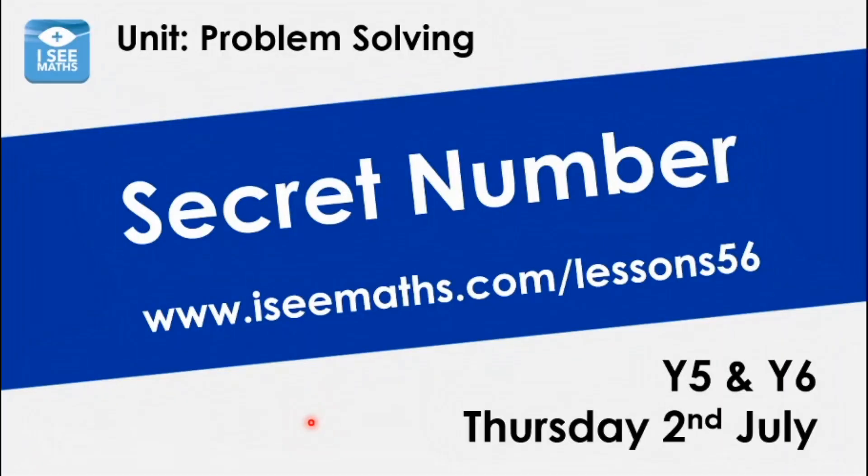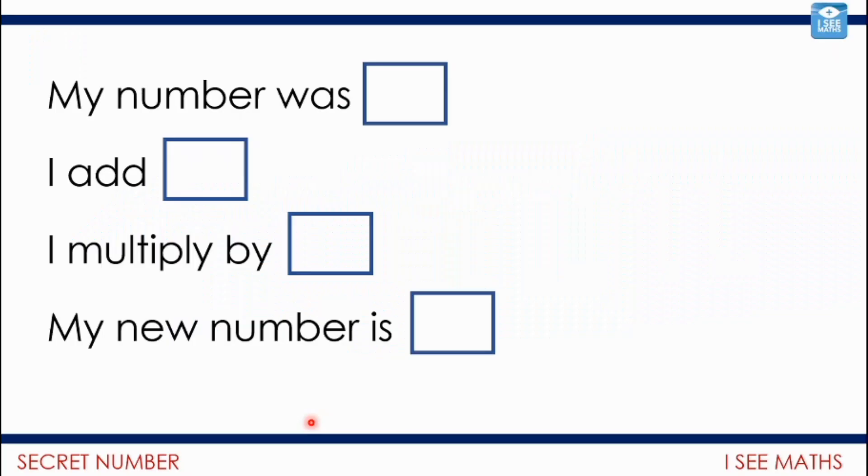So today's main task centres around inverse operations. It's called secret number because we're going to have to try and find a mystery number. And it's really about understanding the order that operations are done in. I'm going to unpack that now and then you're going to get stuck into that task. So let's say this. My number was, and then I add something, and I multiply by something, and my new number is. Now here, there's lots of possibilities that my number could be.